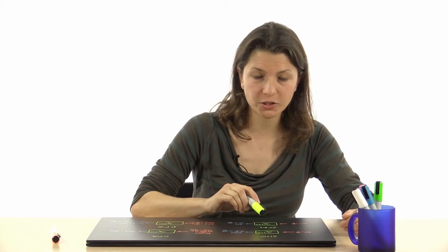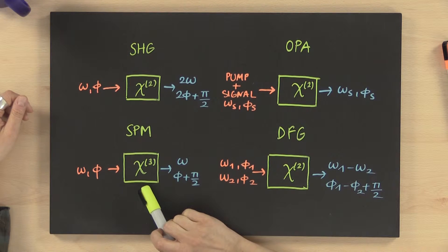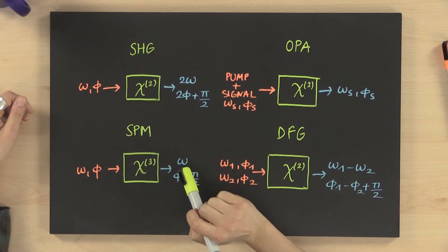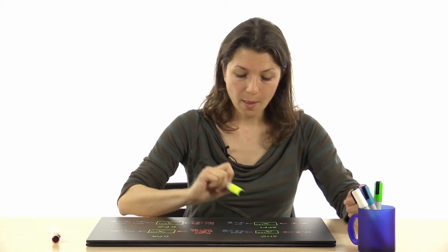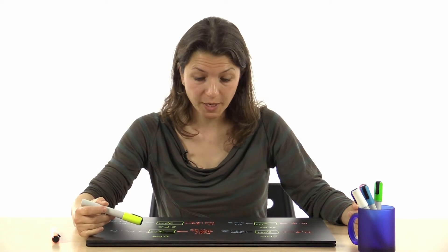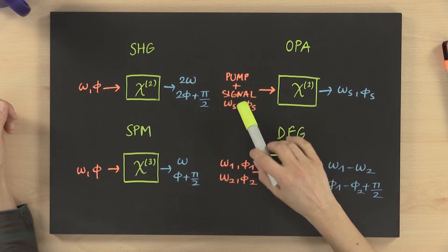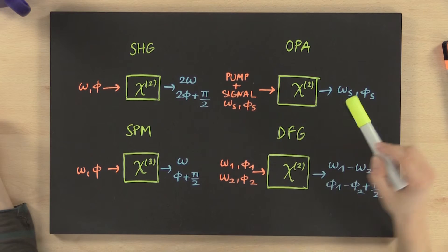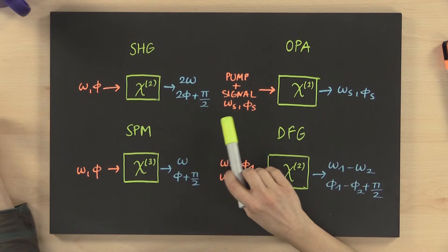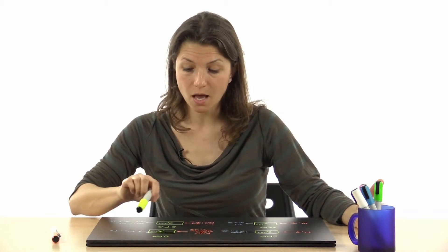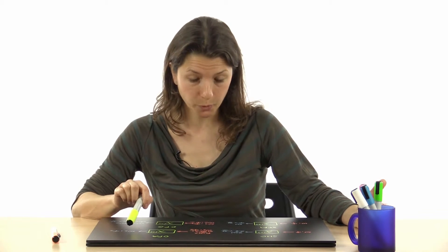In self-phase modulation, the pulse goes through a third-order non-linear medium and the frequency becomes broader, but the phase is not affected by this phenomenon. In optical parametric amplification, a pump and a signal go through a second-order medium, and both the frequency and the carrier envelope phase of the signal are not affected by the process.